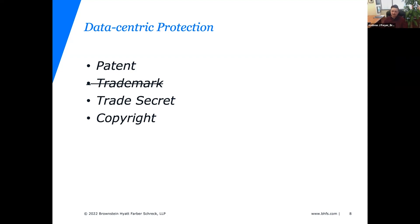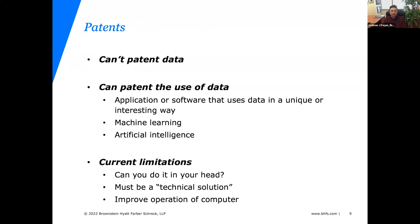As a direct transition from what Peter said, trademarks don't help much here — they protect brand identity and product source origin. Today we're talking about the actual functional relationships between data, algorithms, and their outputs. We'll cover concrete examples and use cases in the patent system, the trade secret system, and the copyright system. Starting with patents: the top headline is that generally speaking, you cannot patent data itself. Values in a table are not subject to patent protection.